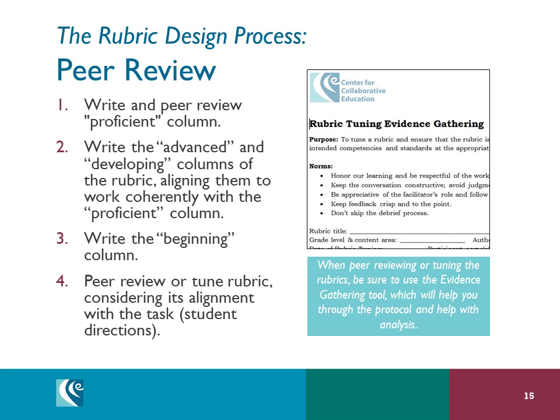An important part of the rubric development process is to have your work tuned by peers, especially for rubrics used in common assessments. We've provided a rubric tuning tool and evidence-gathering chart to help with this process. Since the entire rubric is built out from the proficiency column, check this with colleagues before moving on — many future challenges can be avoided by paying extra attention here. After this initial review, move on to the advanced and developing columns and make sure there's coherence across the levels. Lastly, write any other columns such as the beginning column, then peer review the entire rubric. Include the student directions to make sure the instruction students receive will lead to the work described in the rubric's proficiency column. Once you've given the assessment, you can do another tuning using the actual student work.